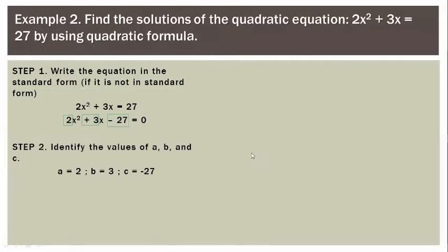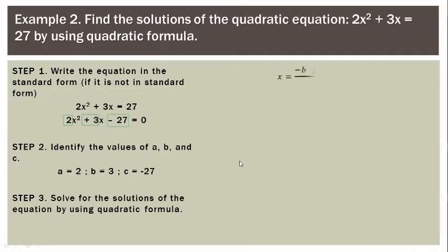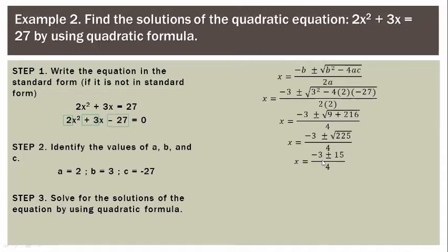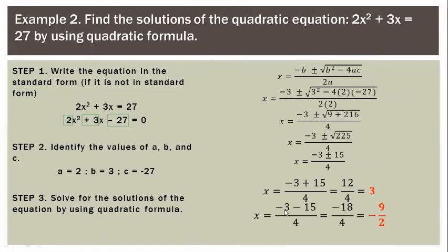Substitute the values into the quadratic formula. We get (negative 3 plus or minus square root of (3 squared minus 4 times 2 times negative 27)) divided by (2 times 2). Simplify: 3 squared is 9; negative 4 times 2 times negative 27 equals positive 216, all over 4. Then 9 plus 216 is 225. The square root of 225 is 15. So we have (negative 3 plus or minus 15) divided by 4. The first solution: (negative 3 plus 15) divided by 4 equals 12 divided by 4, which is 3. The second solution: (negative 3 minus 15) divided by 4 equals negative 18 divided by 4, simplified to negative 9 over 2.